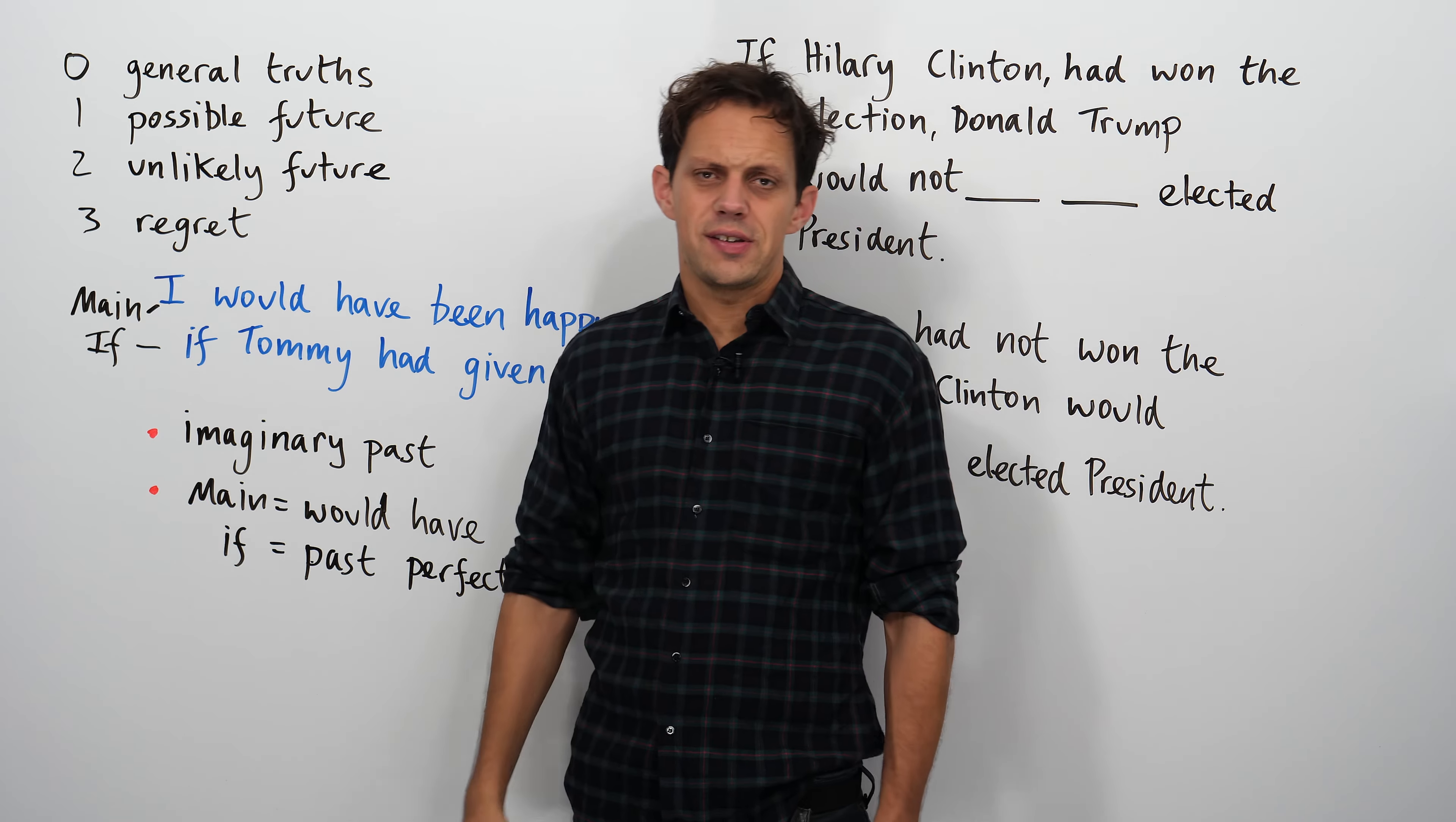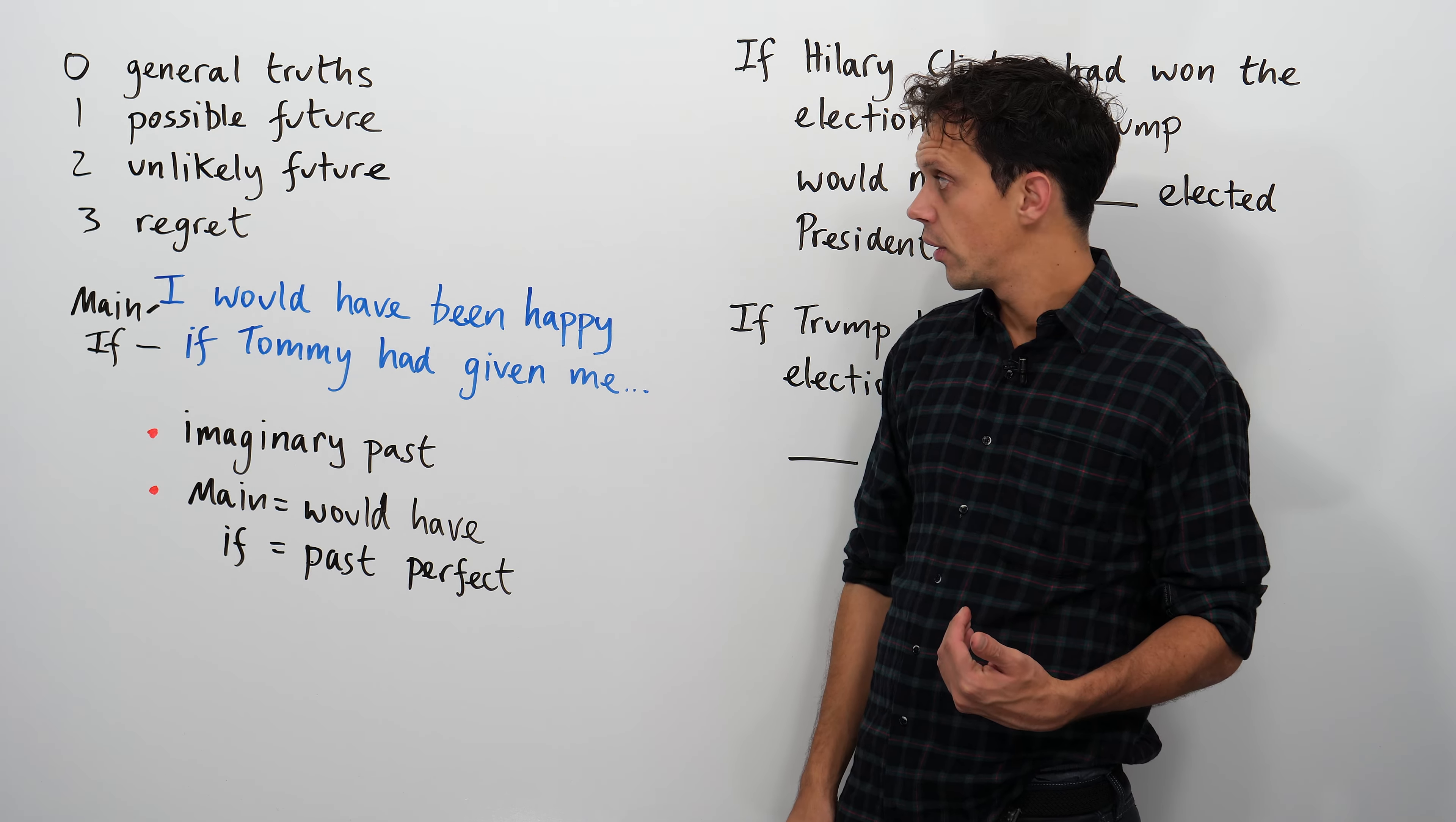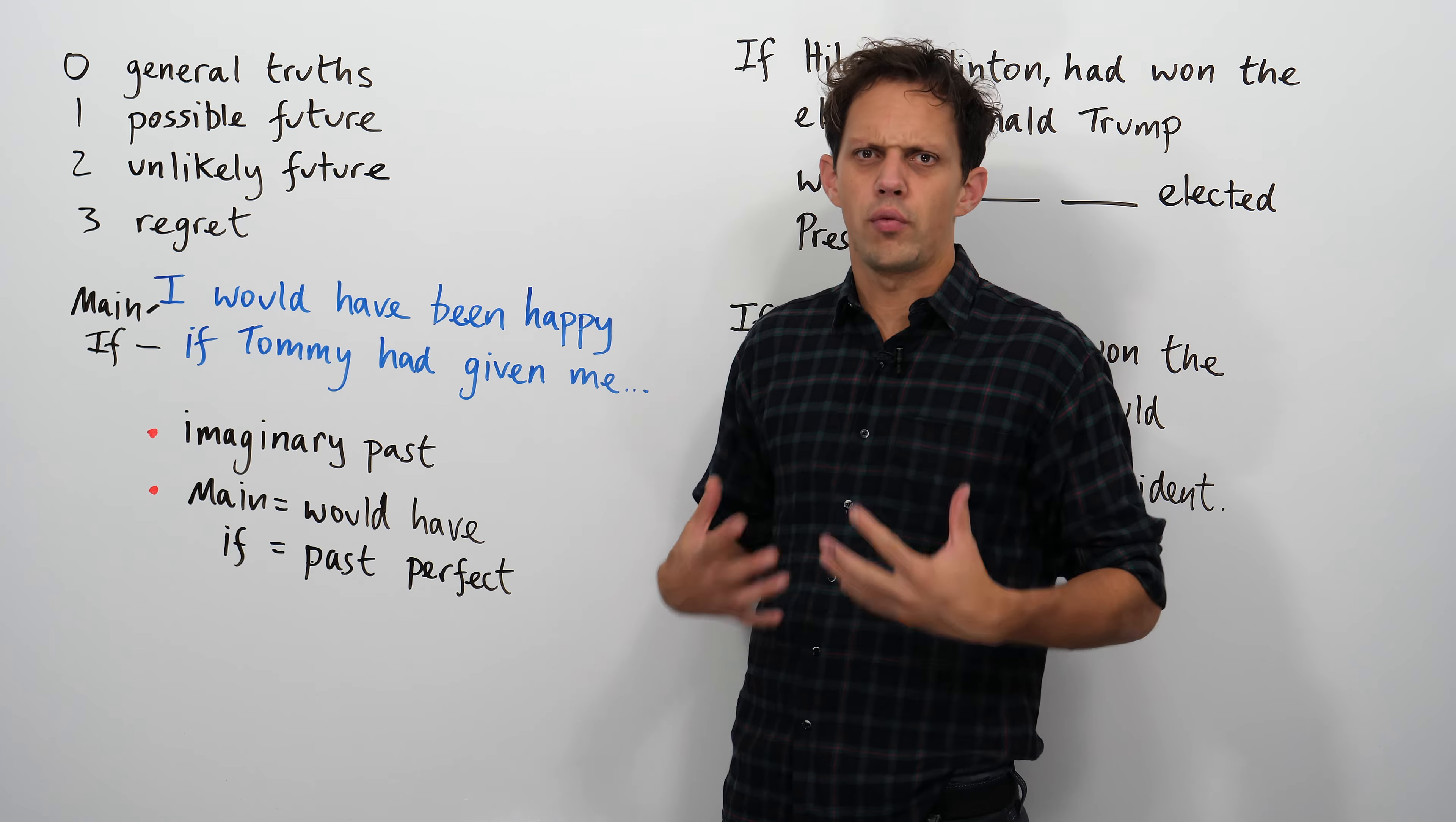We've got four conditional tenses in English. The zero conditional talks about general truths. The first, a possible future. Second, an unlikely future. And the third conditional looks back, wishes things were different. It's all about regret.